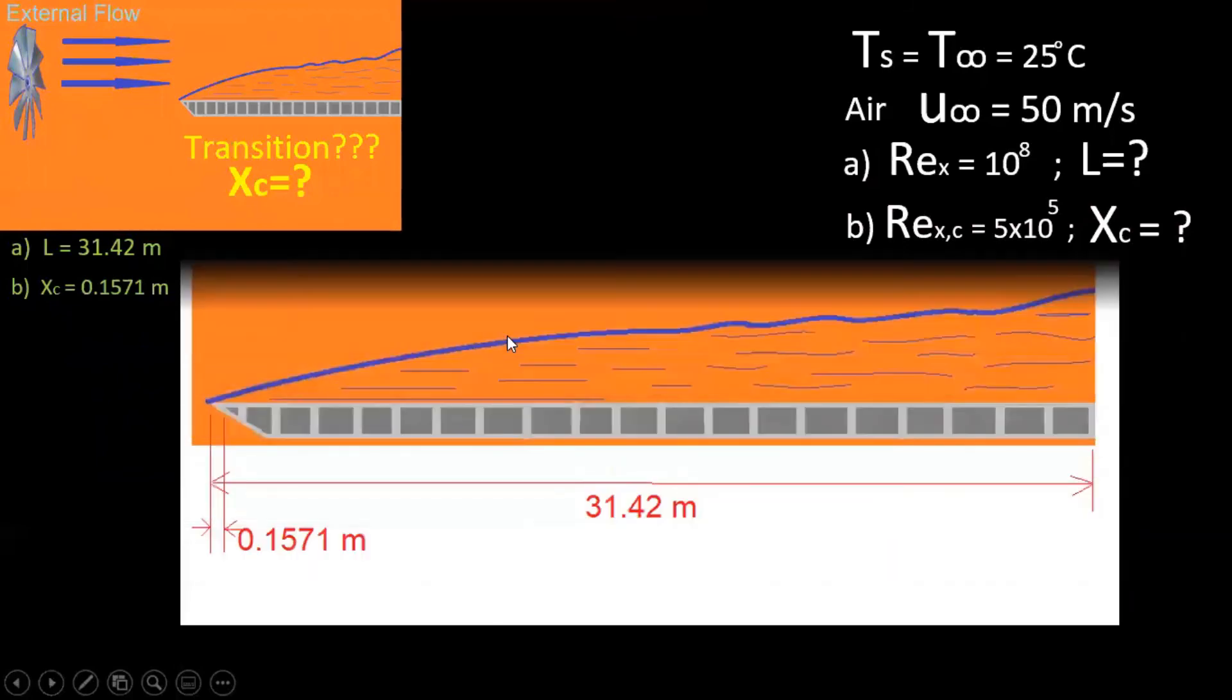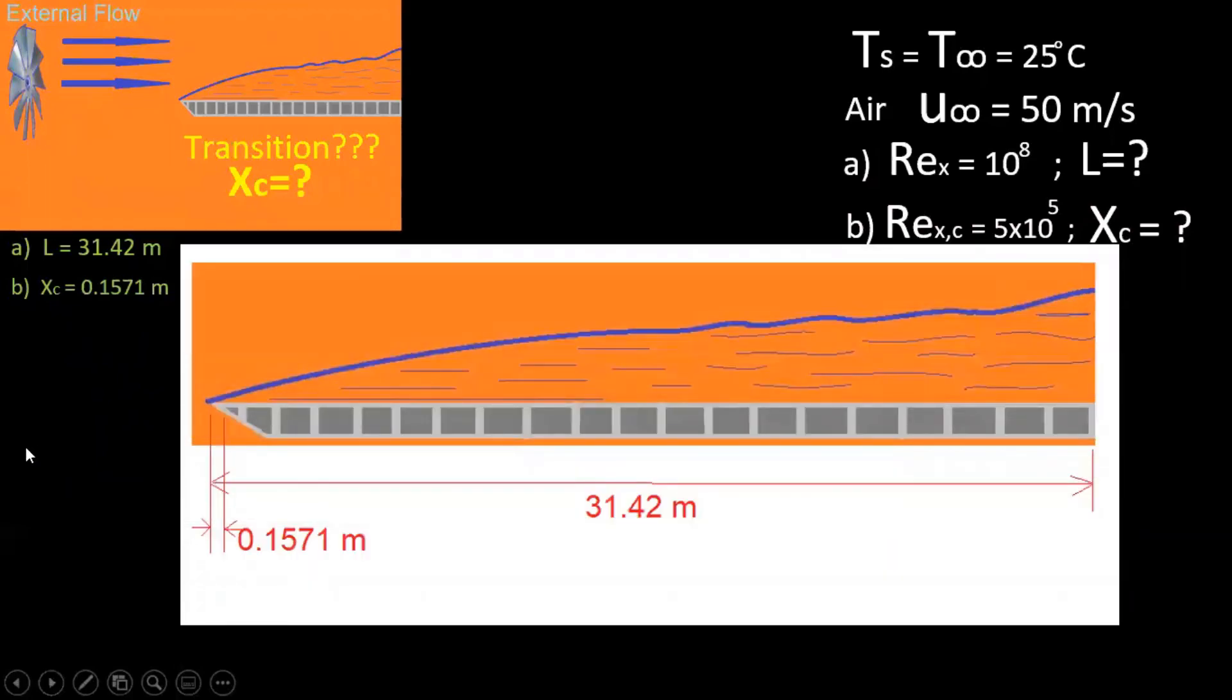Now just to put this in perspective as we close, let's see what kind of distance would this be. 31.42 meters, the length of our entire plate, and in order to reach the required Reynolds number, and transition would happen right at the beginning at 0.15 - that's 15 centimeters, very very early.